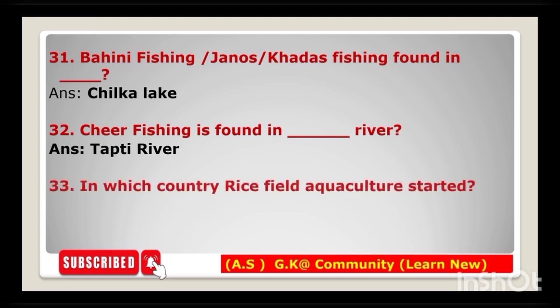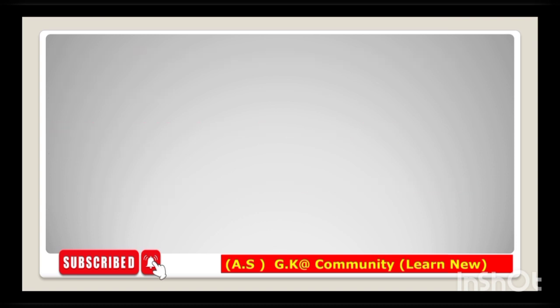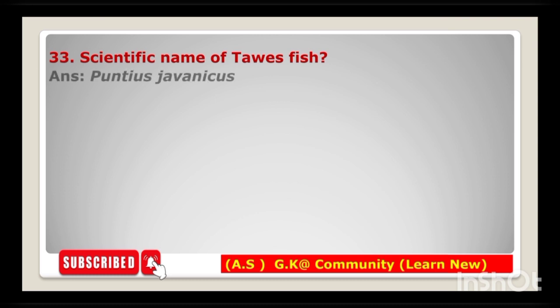Next one: in which country did rice field aquaculture start? The answer is Indonesia — rice field aquaculture started in Indonesia. Next question: scientific name of tavas fish is — the answer is Puntius javanicus.